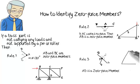Here, joint D connects three members. Two of the members are collinear, therefore CD is a zero-force member.